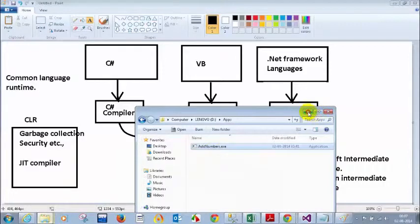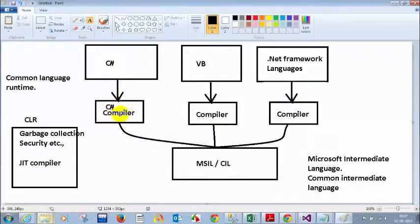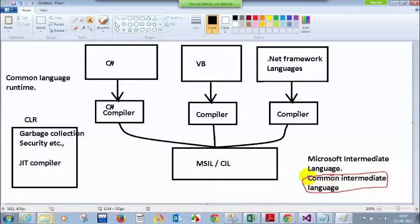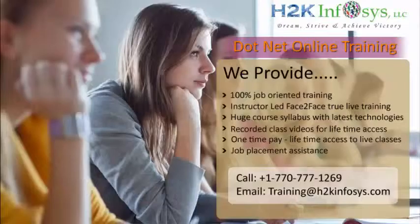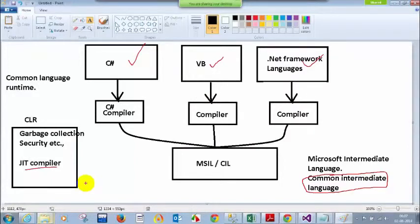Whenever you compile your C# code using the C# compiler, it is converted to MSIL code. That is why they call it Common Intermediate Language — it is common irrespective of which language you are developing in. Your CIL code is converted to native code using CLR with the JIT compiler. If someone asks what CLR is used for: it takes care of garbage collection, implementing security, and its main feature is using the Just-In-Time compiler to convert CIL code to native code.